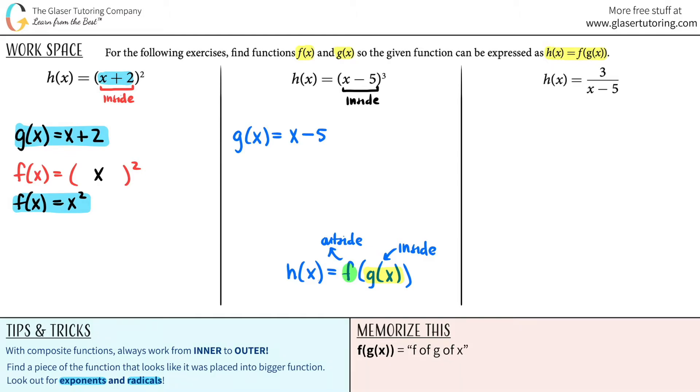Now, for the other function, which they're stating as f, let's see. The whole thing was x minus 5 cubed. But remember, when you're trying to find the outer function, just in your mind, get rid of what you said was the inner function, and just put an x there. And then just clean it up.